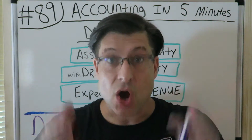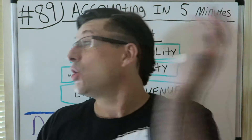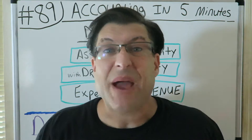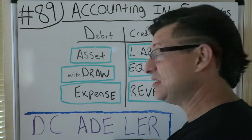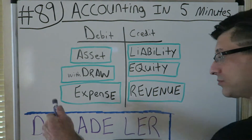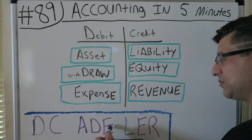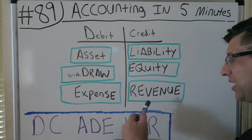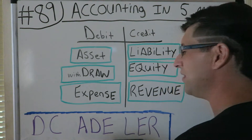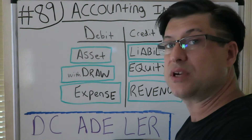CPA strength back with another accounting in five minutes. DC ADER: Debit, Credit, Asset, Draw, Expense, Liability, Equity, Revenue. You're gonna write that down like this — DC ADER — first thing on your paper.